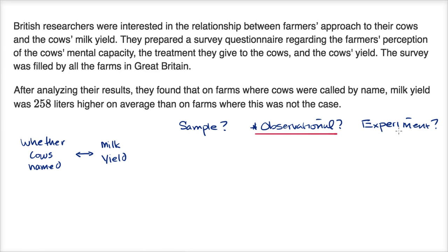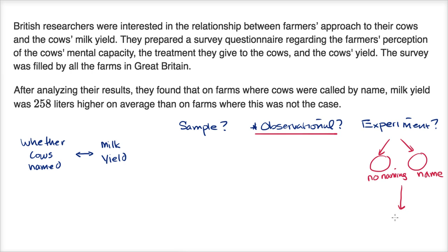This is not an experiment. If there was an experiment, we would take the farmers and randomly assign them into one of two groups. In one group we would say, don't name your cows. In the other group we would say, name your cows. Then we would wait some period of time — say six months or a year — and see the average milk production after either not naming or naming the cows. That's not what occurred here. Here they just did a survey and found this connection between whether the cows were named and the actual milk yield. So clearly, this was an observational study, not an experiment.